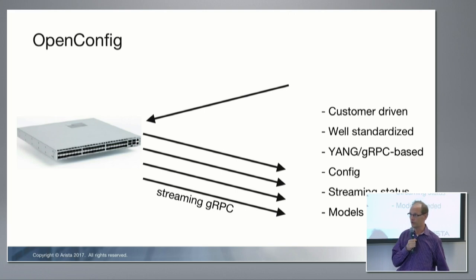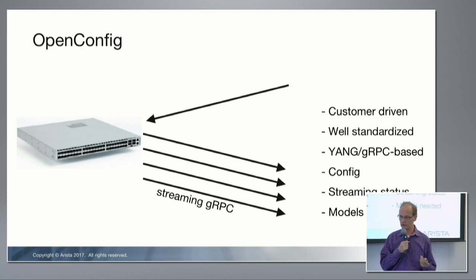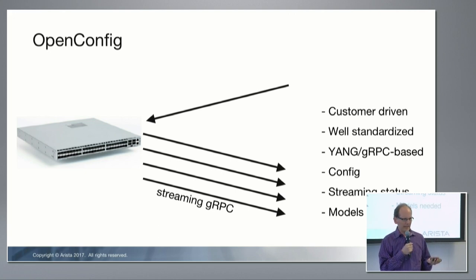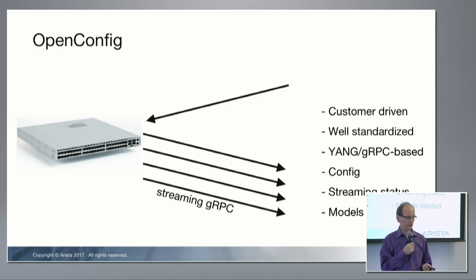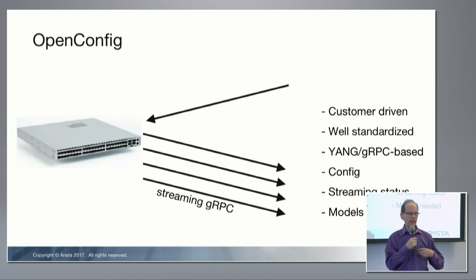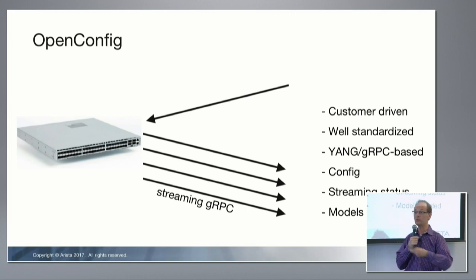OpenConfig is gRPC-based, customer-driven, and well standardized. What's most interesting to me is the streaming status element — you can subscribe in OpenConfig to certain paths in the OpenConfig hierarchy, and as that state changes, state updates are streamed to you.